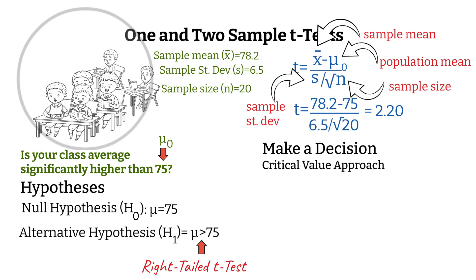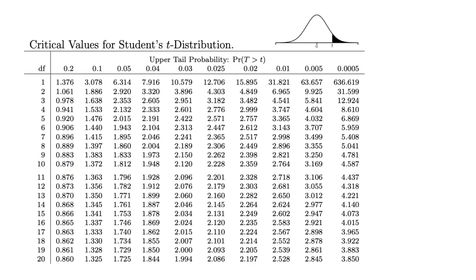In the critical value approach, we compare the t-statistic to a critical t-value from a table. The critical t-value is a cutoff point. If your test statistic is beyond this point, the result is considered rare enough to reject the null hypothesis. Let's take a look at how to use a table to find the critical t-value. For our one sample example, we select a significance level of 0.05, which is a common choice. And it means that we are willing to accept a 5% chance of rejecting the null hypothesis when it's actually true.